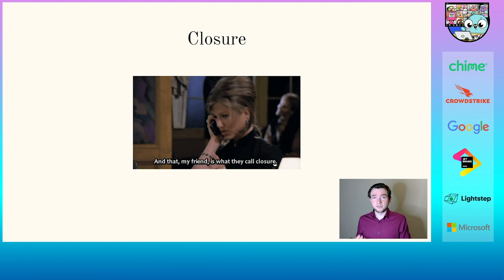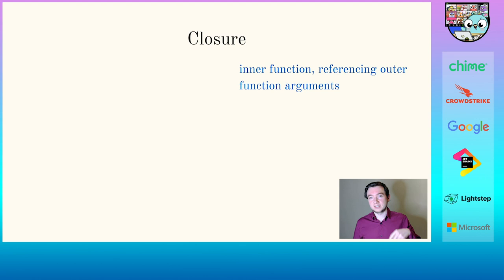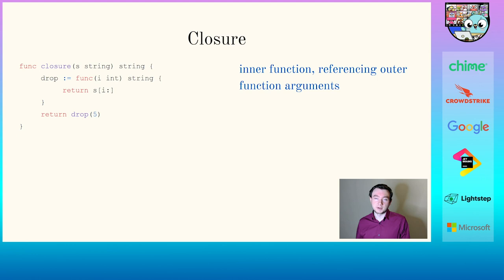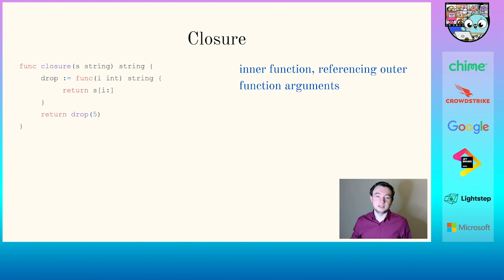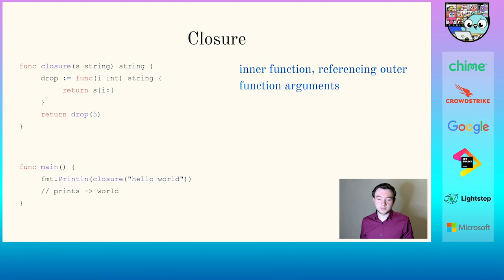The first thing we'll look at is closures. A closure is basically at least two functions where the inner function references variables from the outer function. On the left side, we have a function called closure that takes a string and returns a string. Inside, we define a second function called drop which takes an integer and returns a string. Inside drop, we return whatever the original string was starting at index i until the end. Finally, we return drop with five passed to it. If we call this with 'hello world', we'll just see 'world'.